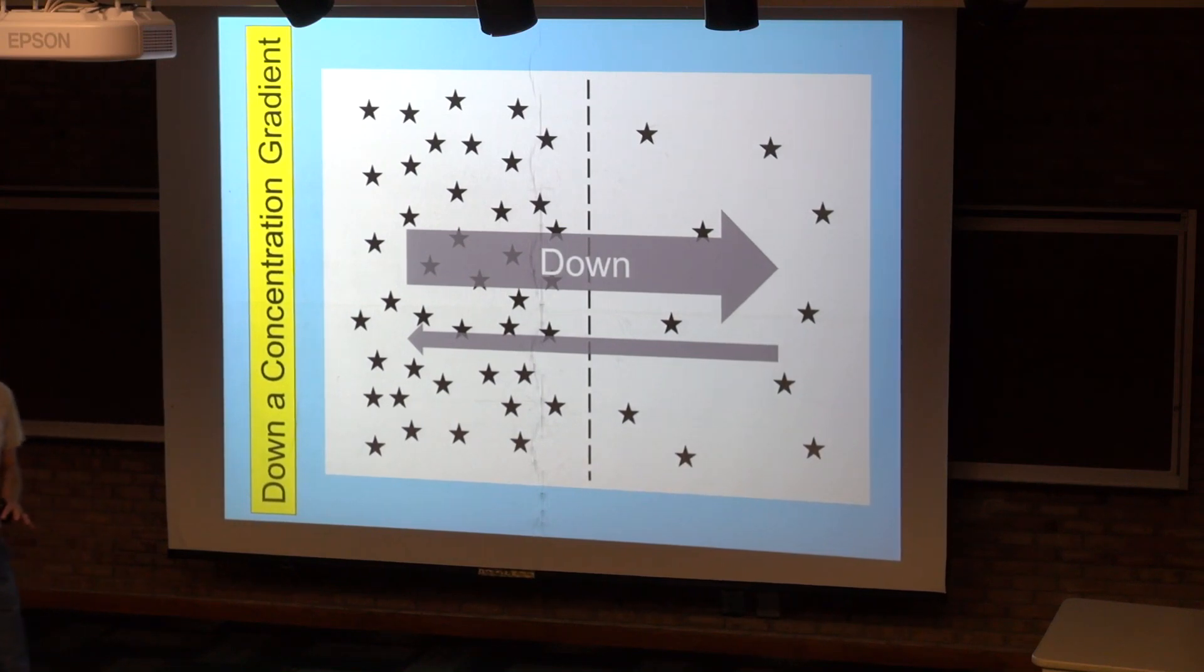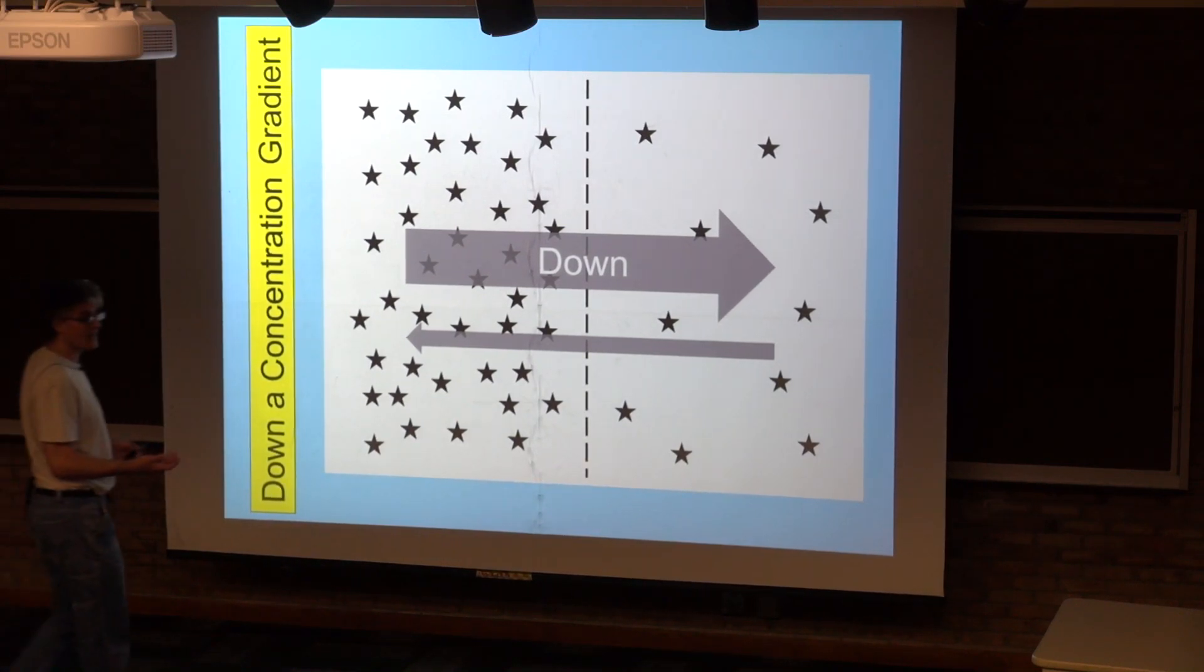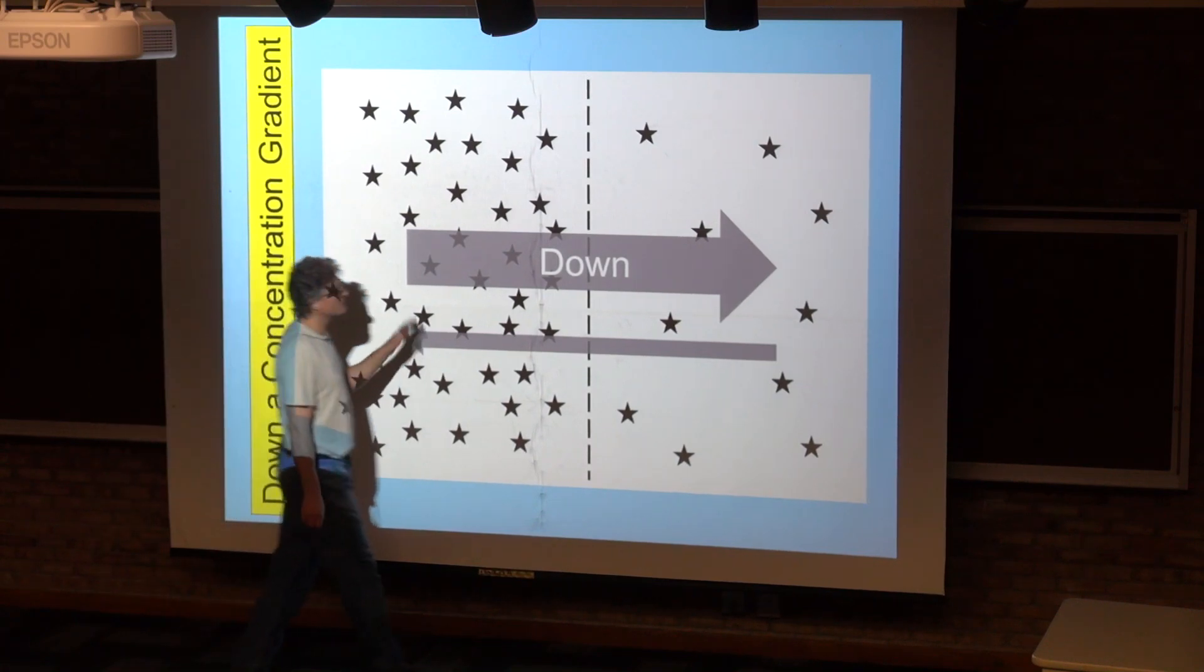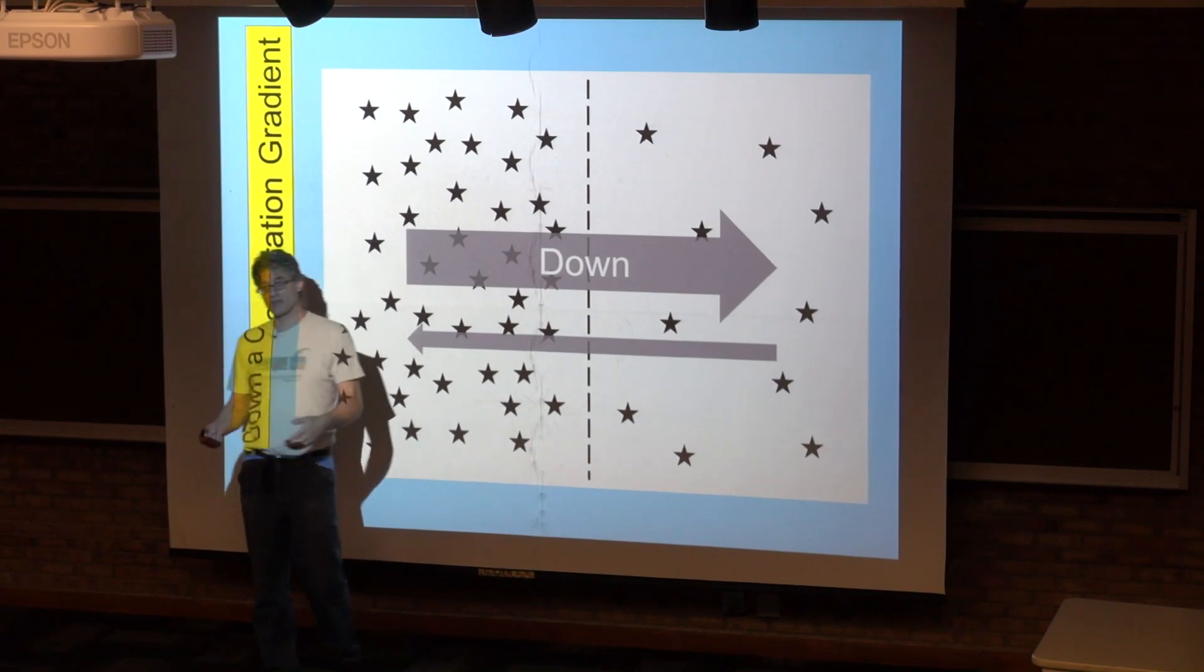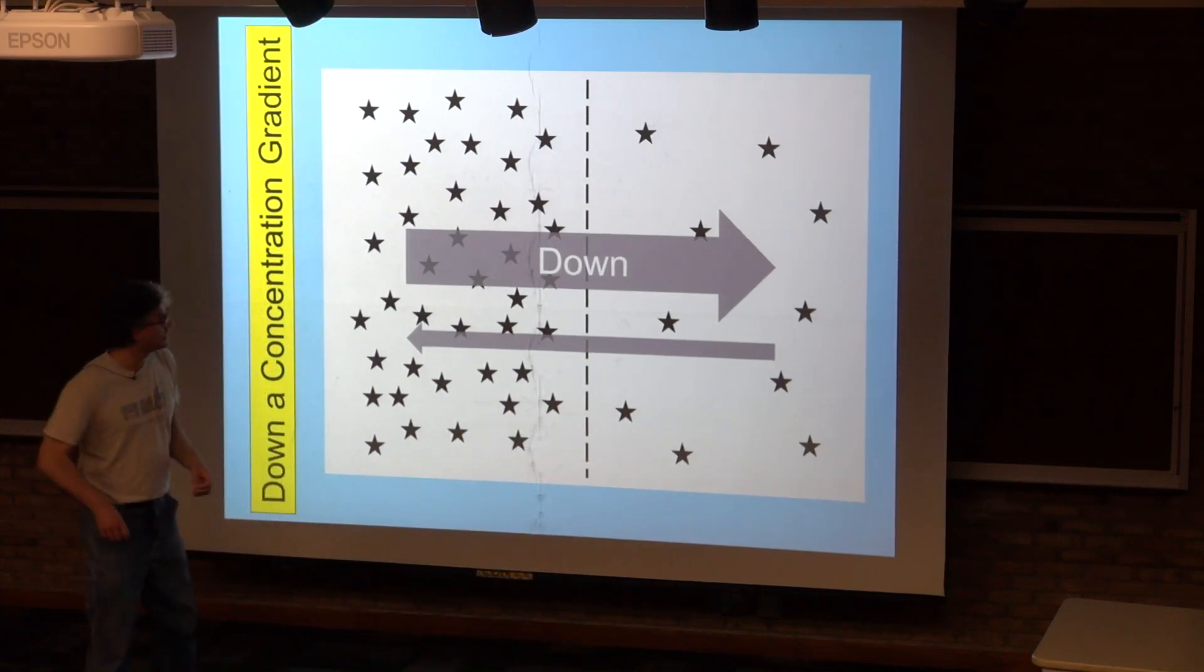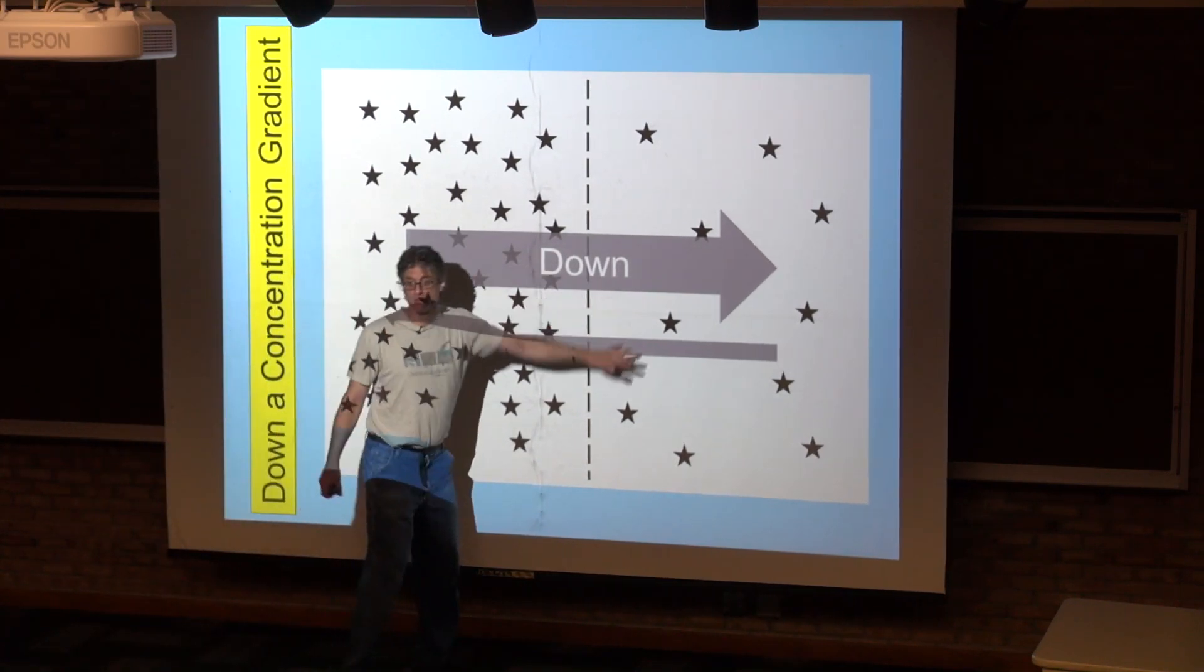However, that's not quite the whole story. This is a dynamic equilibrium we're talking about. If something can move in this direction and also can move in this direction, like something that can just cross a lipid bilayer, it's going to be moving in both directions.